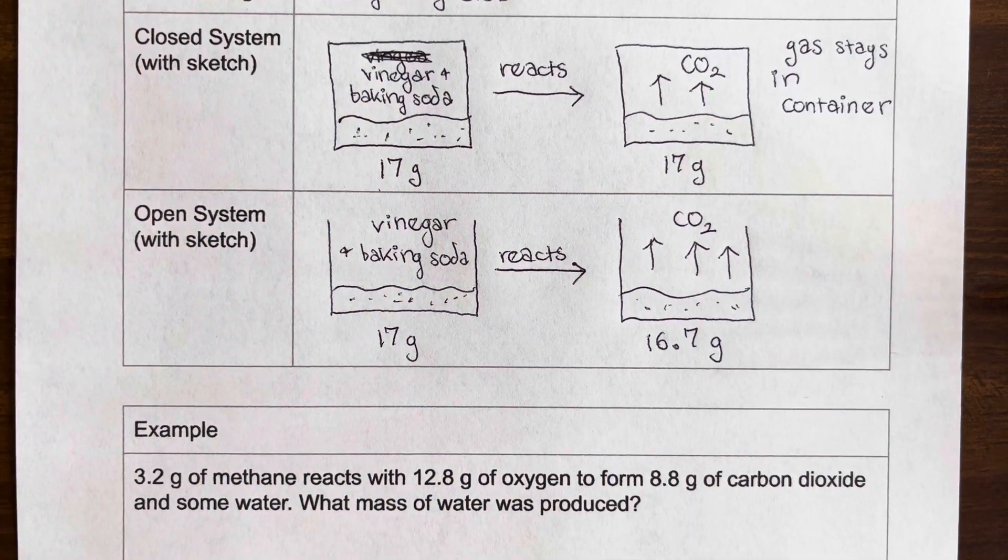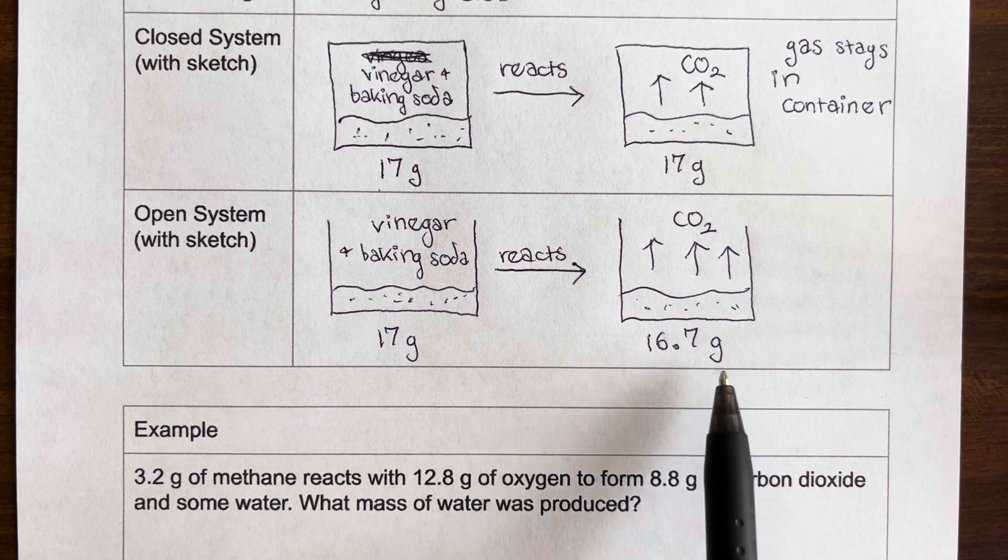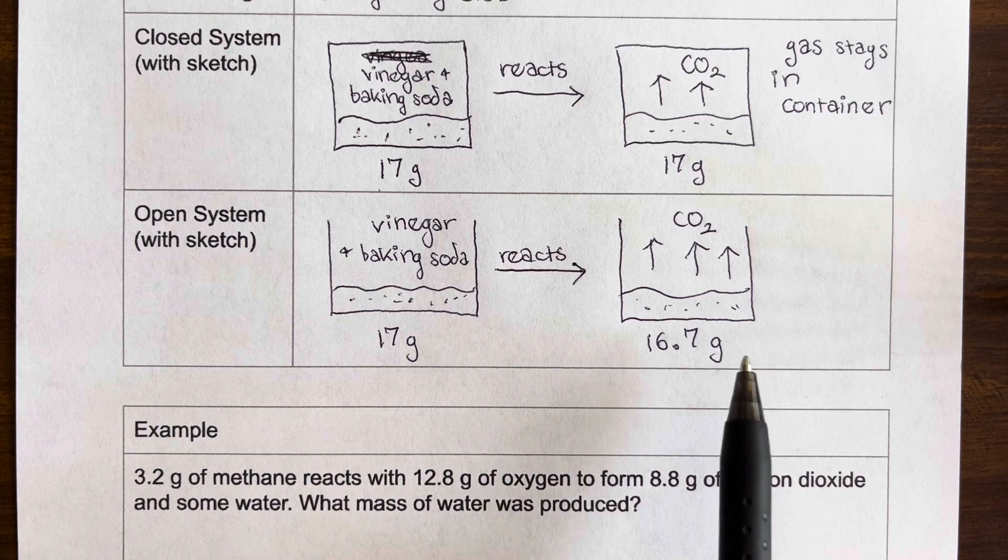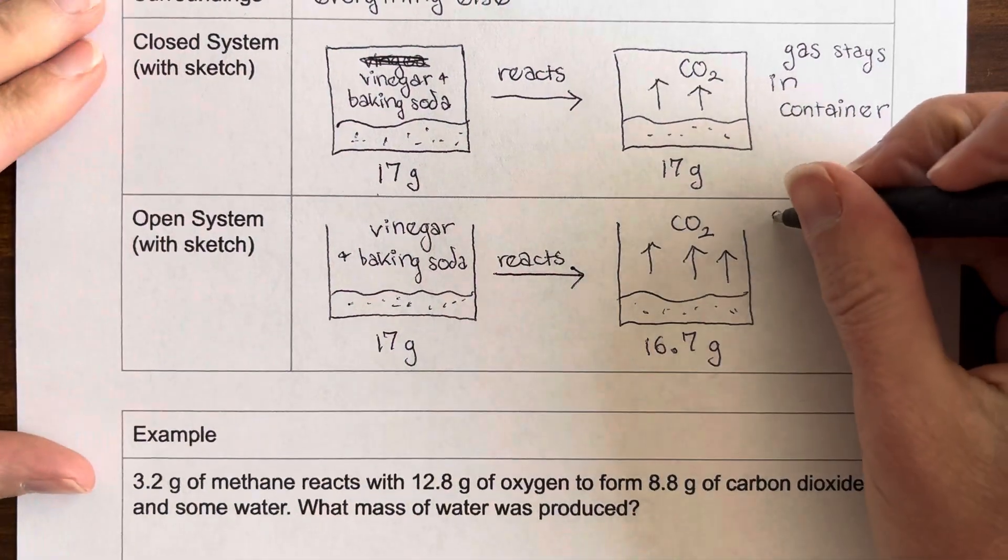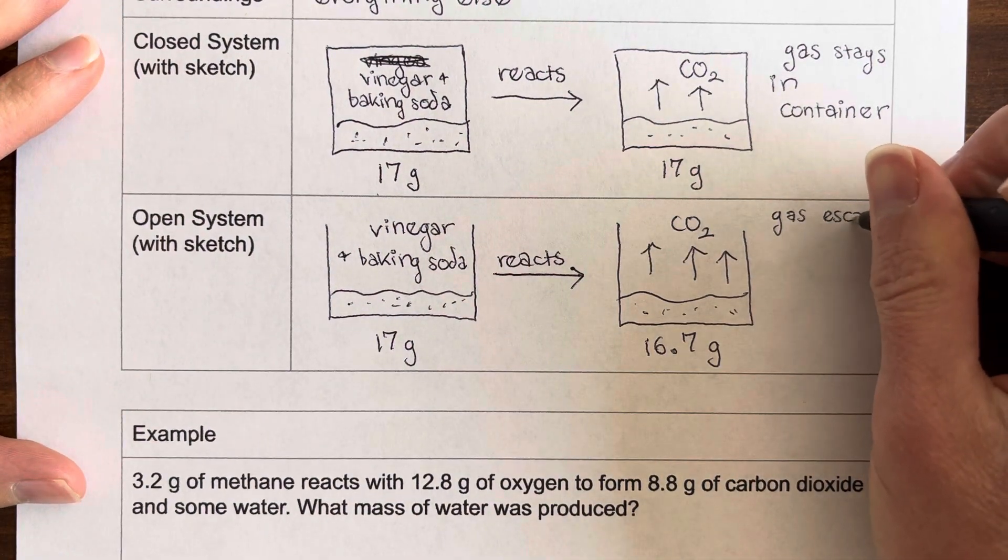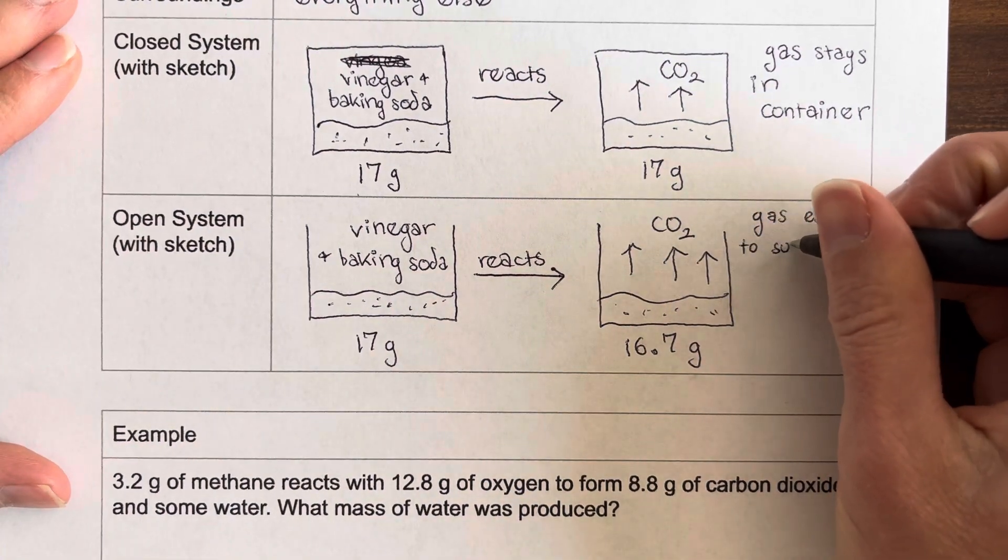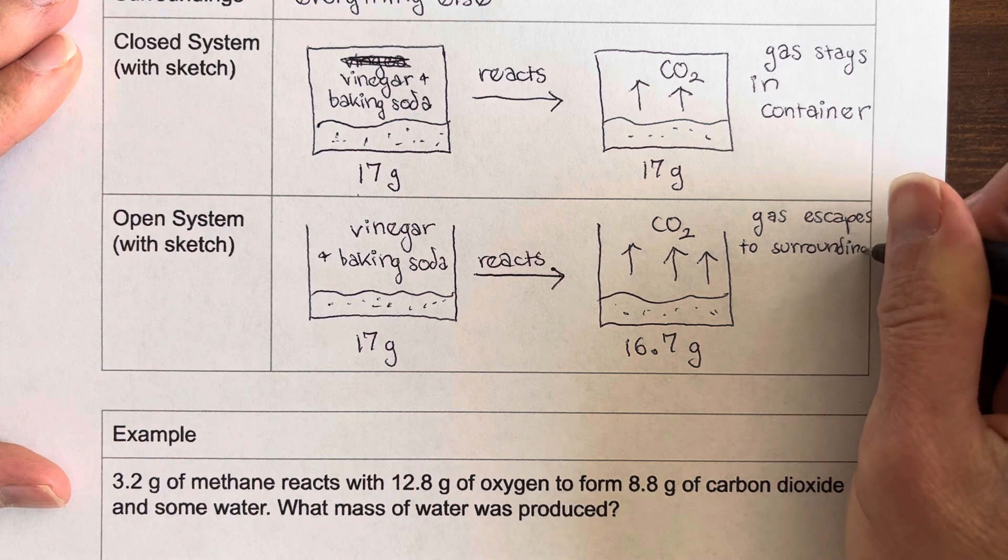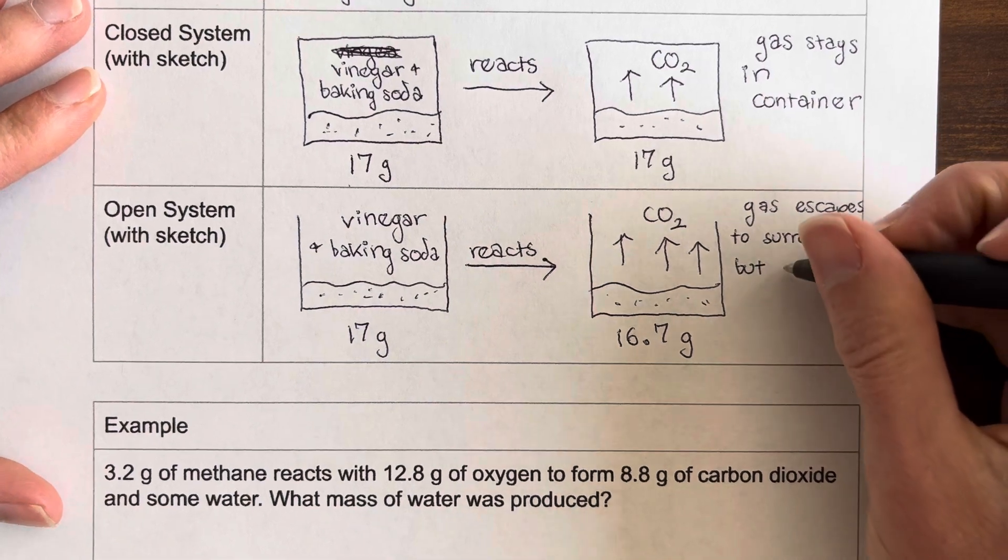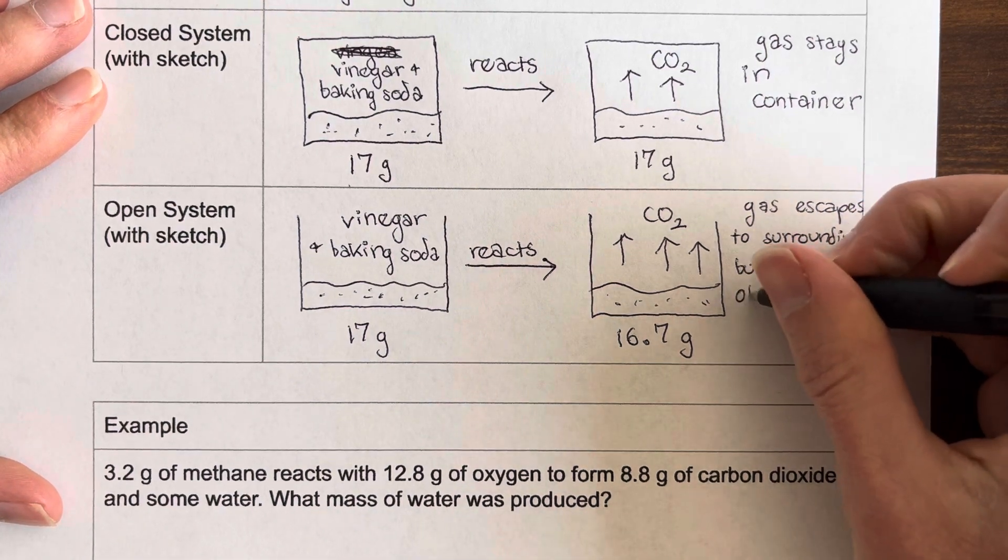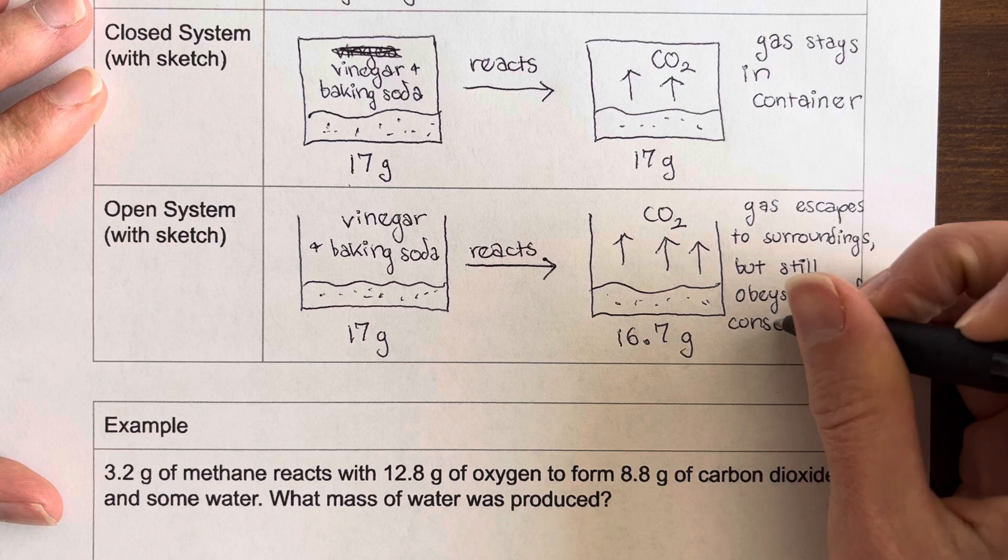And then we get the mass afterward, and this time the mass is 16.7 grams. So was the law of conservation of mass followed? And the answer is yes, even though this mass is lower. The reason that this mass is lower is that some of the gas escaped to the surroundings. So the gas escapes to the surroundings, but the situation still obeys the law of conservation of mass.